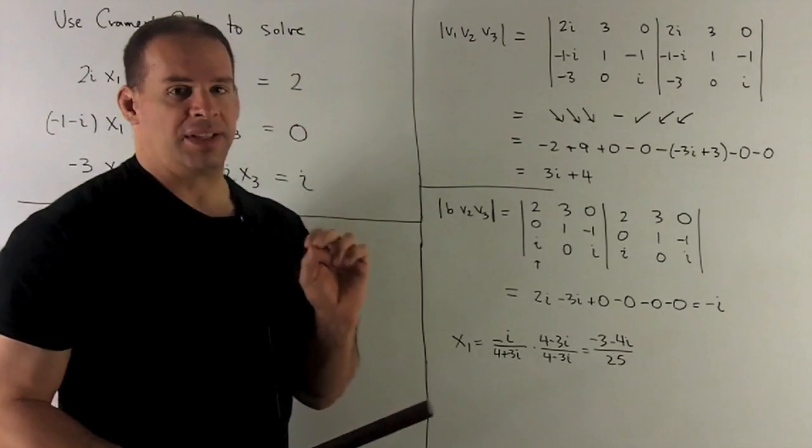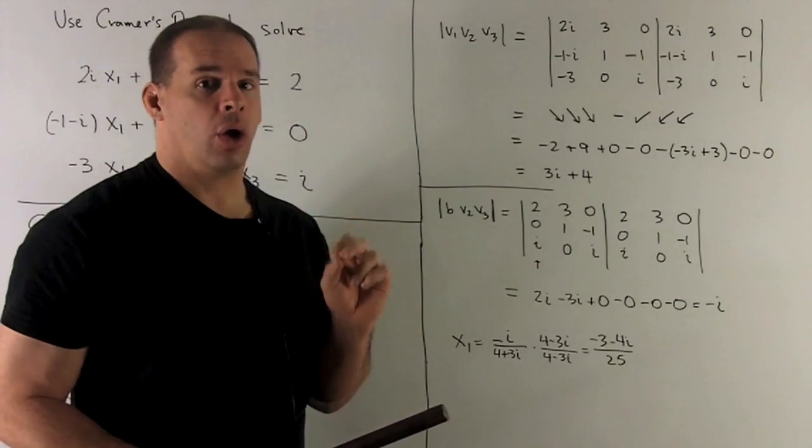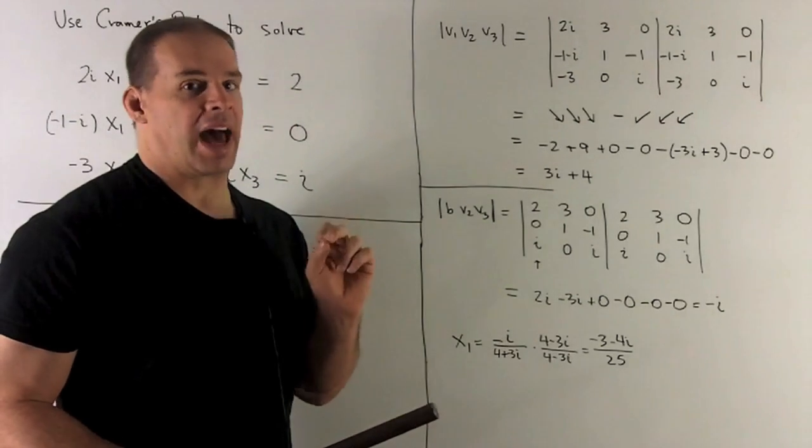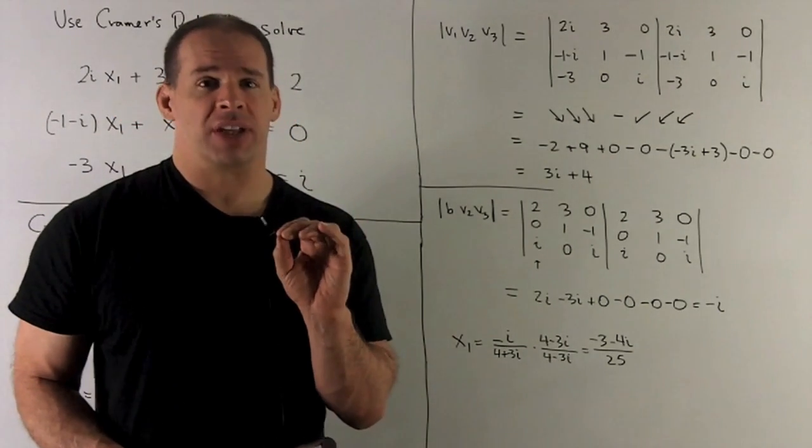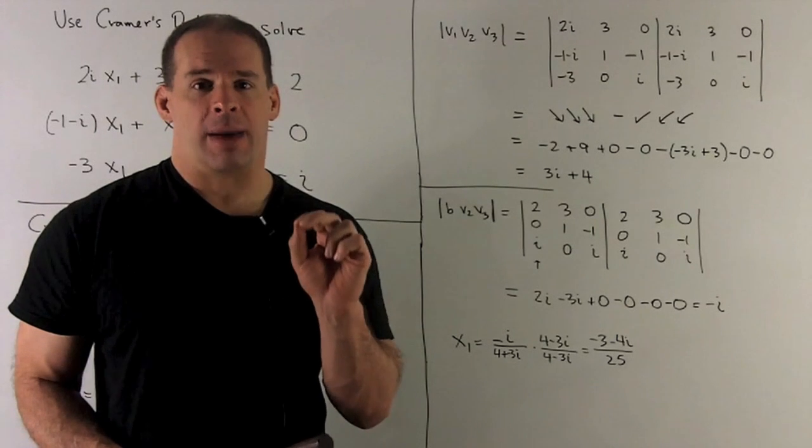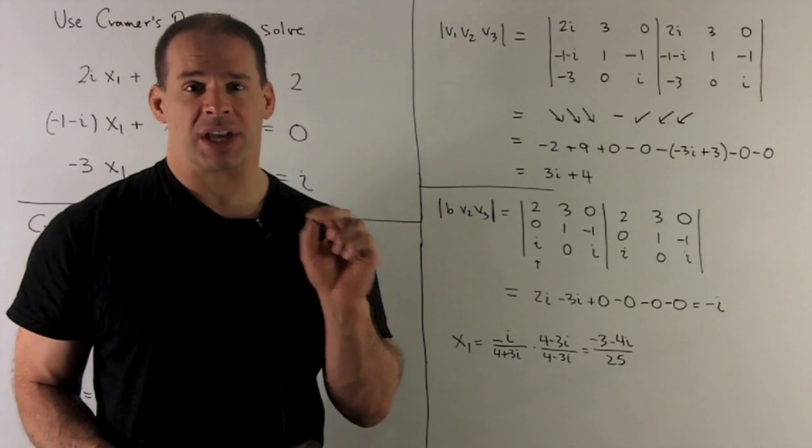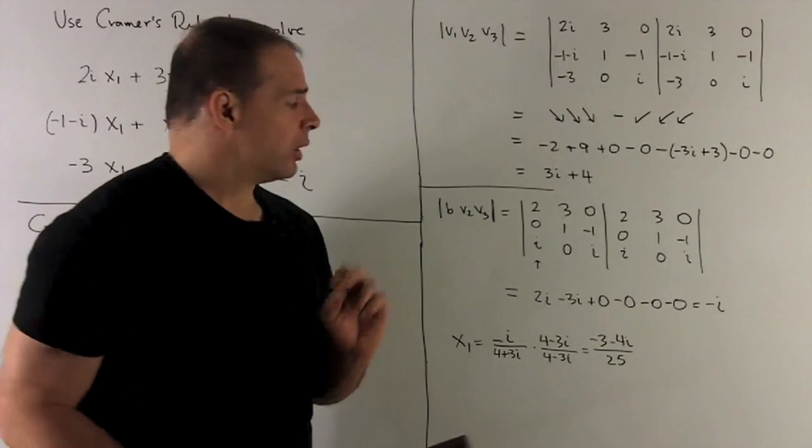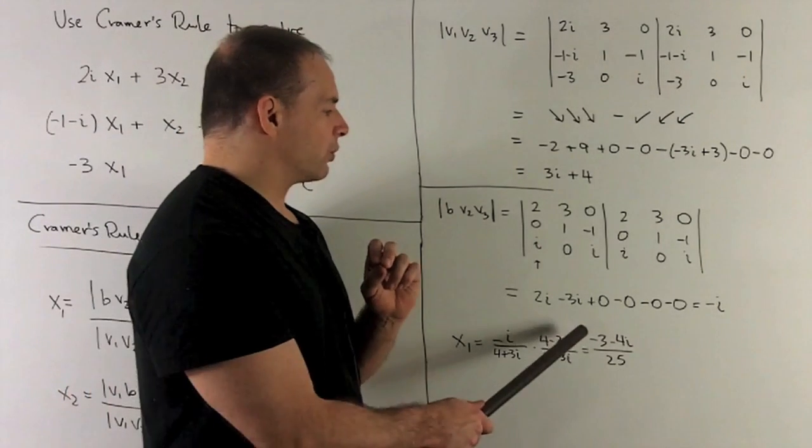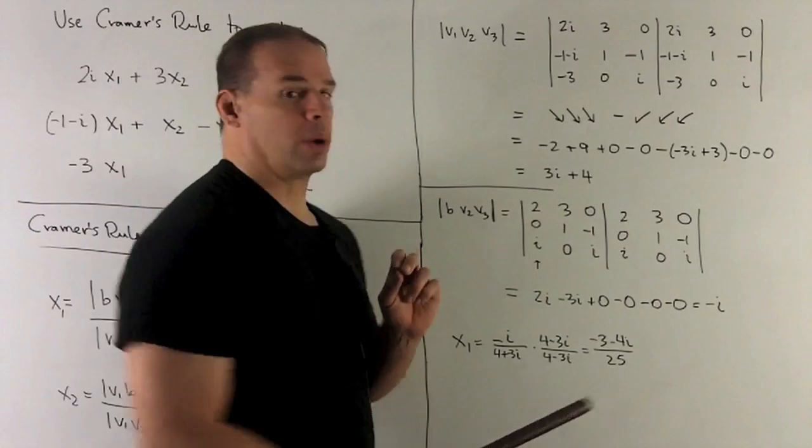Now that means X1 is going to be equal to minus i over 4 plus 3i. We don't want our answer written as a fraction like that, so I can clear out the denominator by multiplying by the complex conjugate over itself. So it's 4 minus 3i over itself.